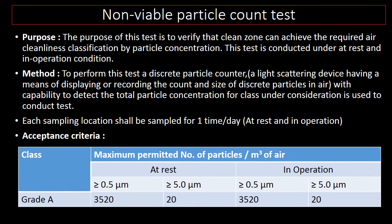The next important qualification test is the non-viable particle count test. The purpose of this test is to verify that the clean zone can achieve the required air cleanliness classification by particle concentration. This test is conducted under at-rest and in-operation conditions. To perform this test, discrete particle counters — light scattering devices having a means of displaying or recording the count and size of discrete particles in air — are used. Each sampling location shall be sampled one time per day under both at-rest and in-operation conditions.